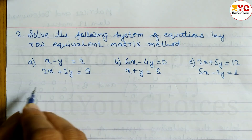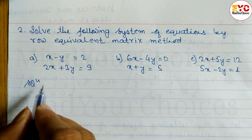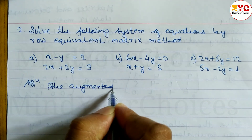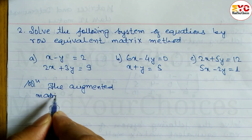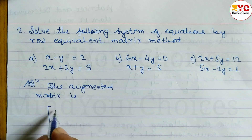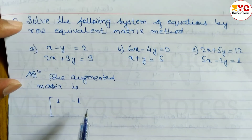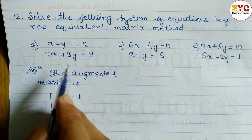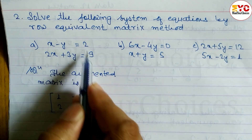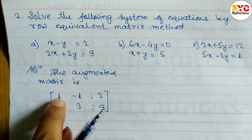Question number 2A. Solution. The augmented matrix is: coefficient of x is 1, coefficient of y is -1. Coefficient of x is 2, coefficient of y is 3. So the augmented matrix is [1, -1 | 2] and [2, 3 | 9].